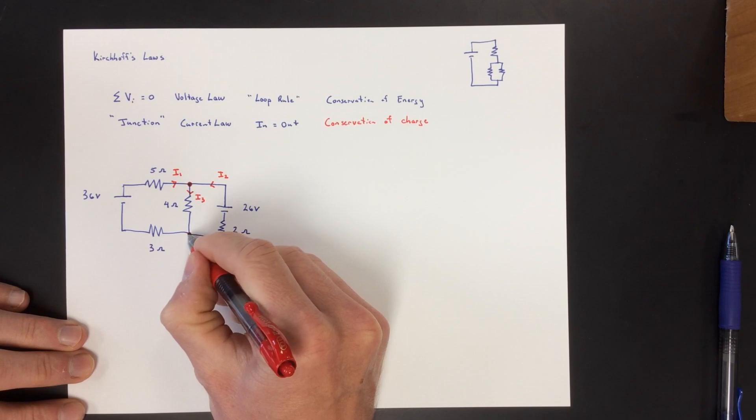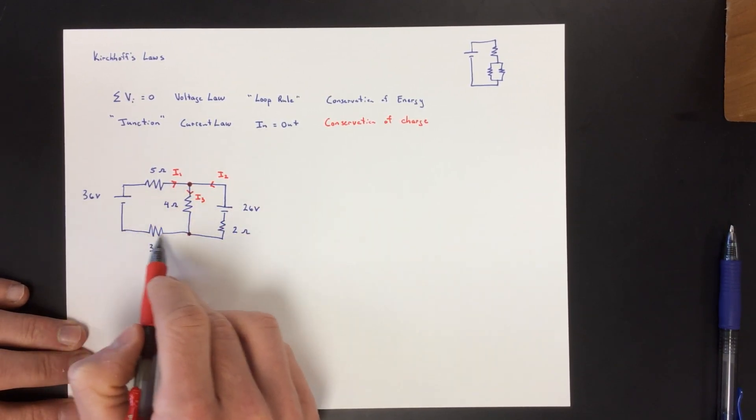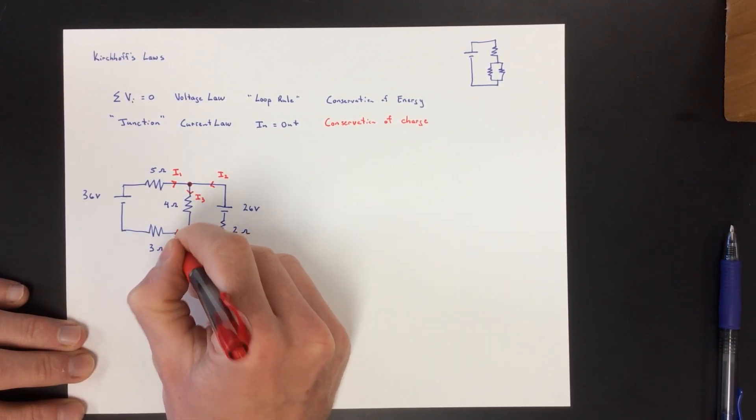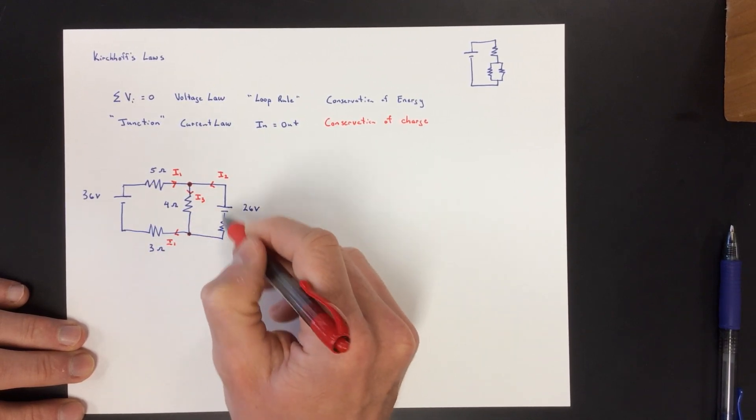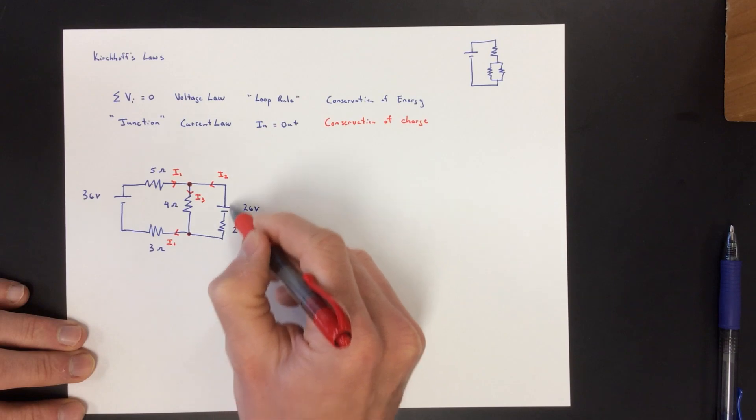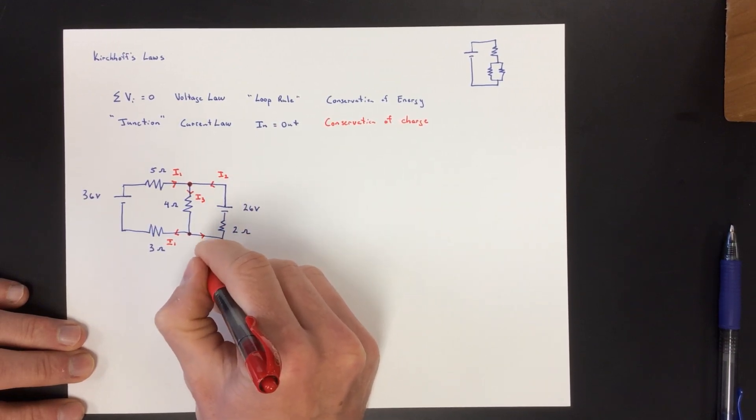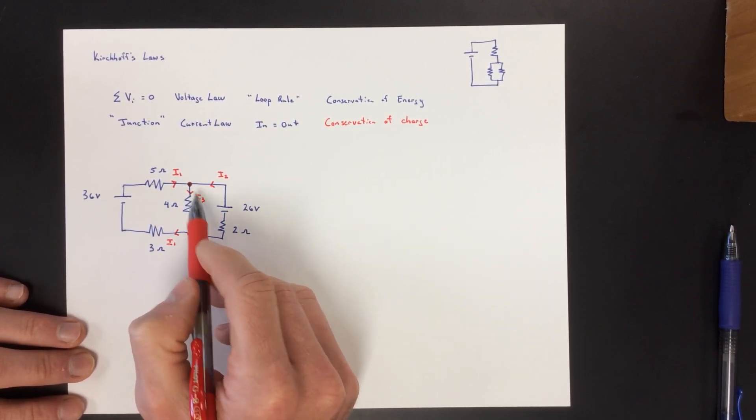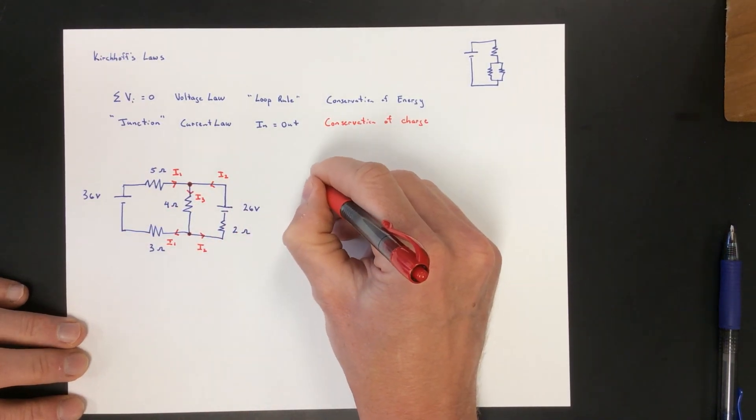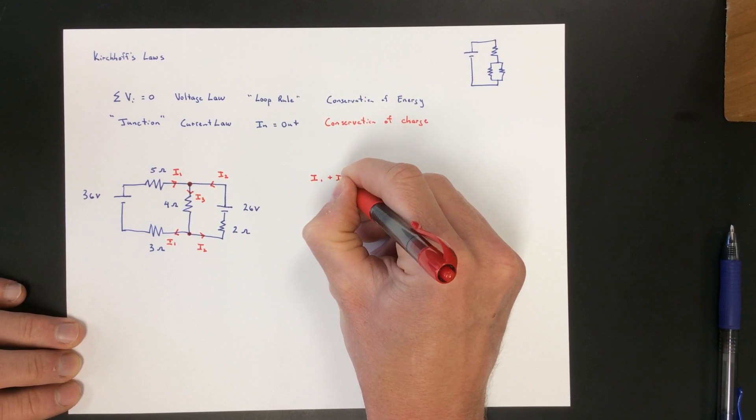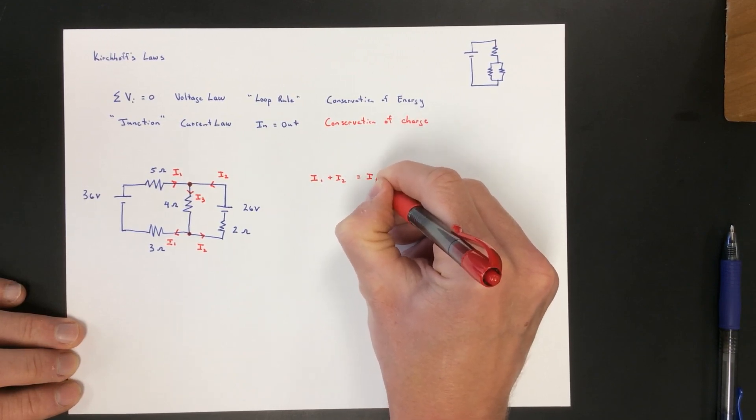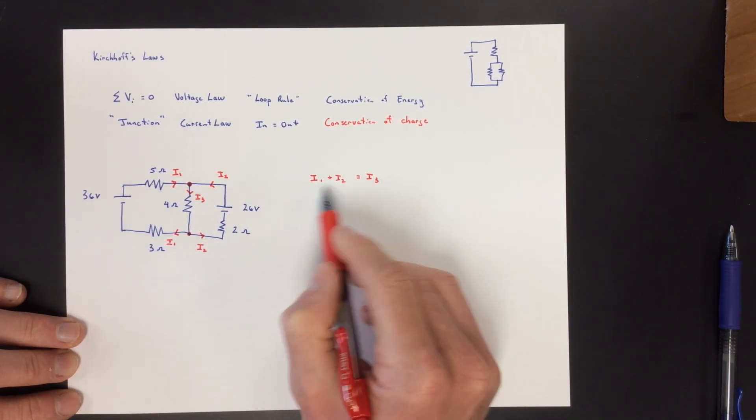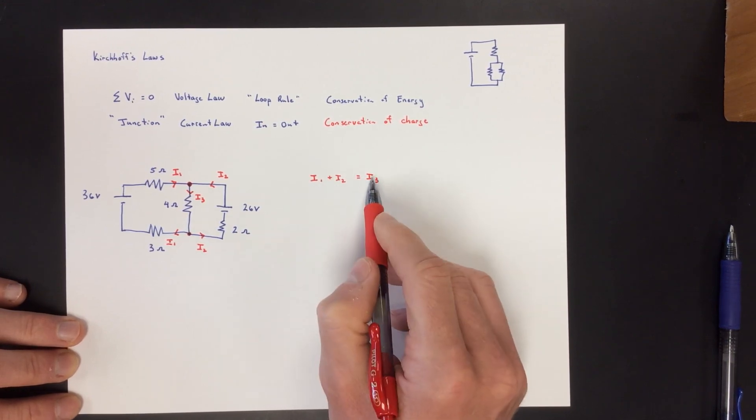This current here all has to be the same current, I1. We know then the current comes back this way as I1. This junction gives us the same value. Here we might say the in is I1 and I2, and the out is I3, so the junction rule says I1 plus I2 has to equal I3. The ins have to equal the outs. This equation comes from the junction rule.